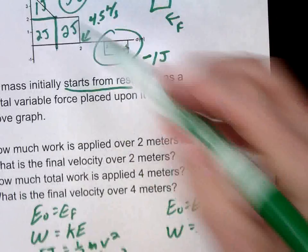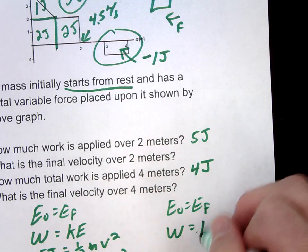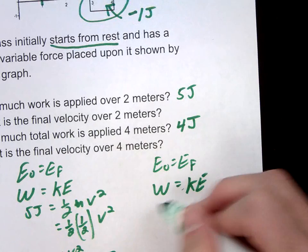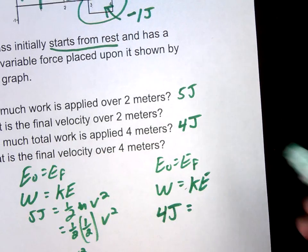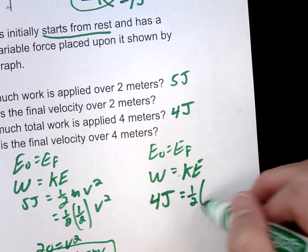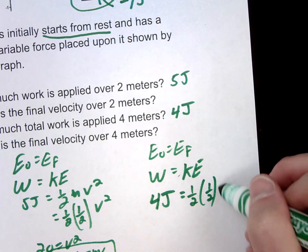So all this work is going to be turning into kinetic energy. Where in this case, the total work is going to be less, 4 joules. So we'll do the same thing. We're going to have 1/2 M, which is 1/2, times our V squared.